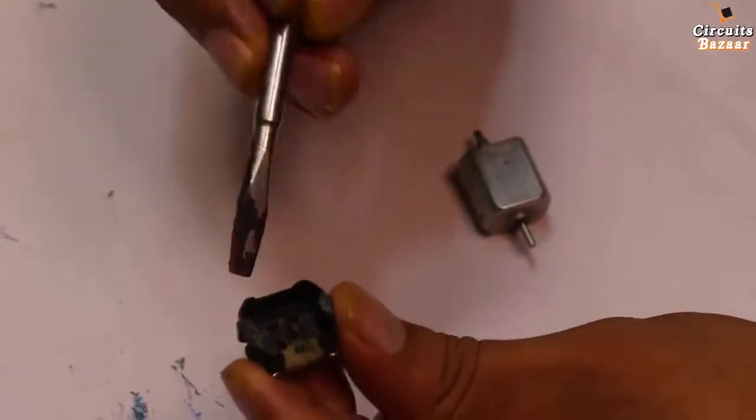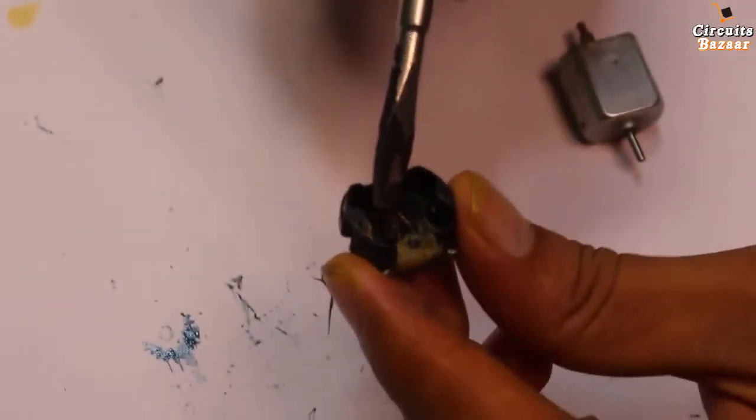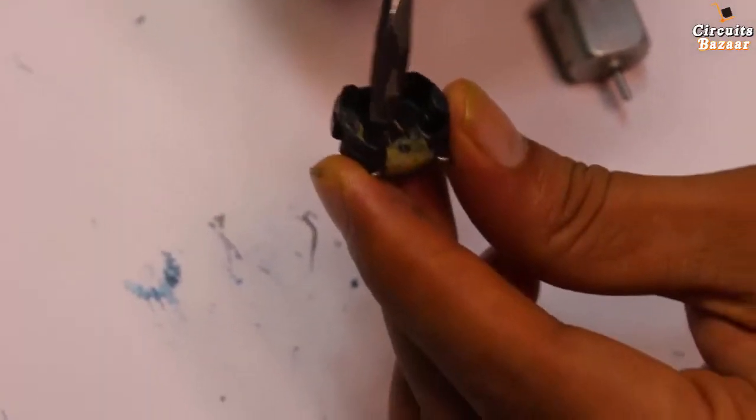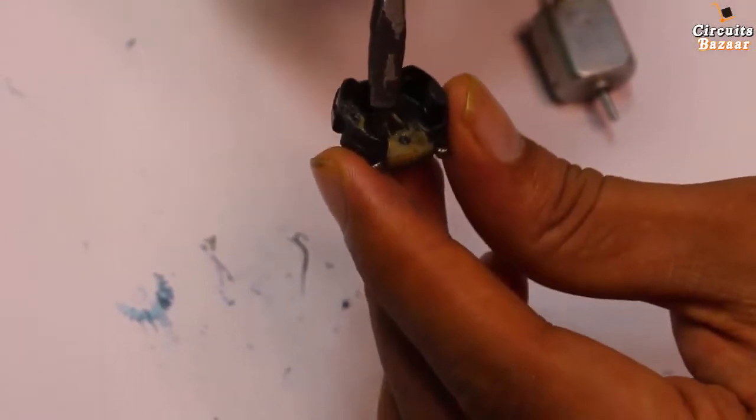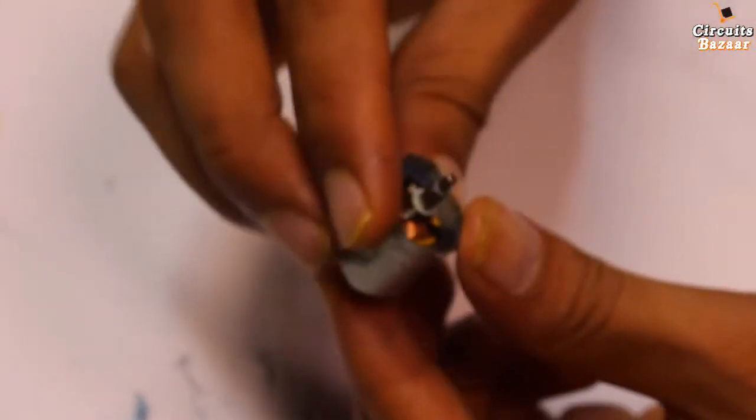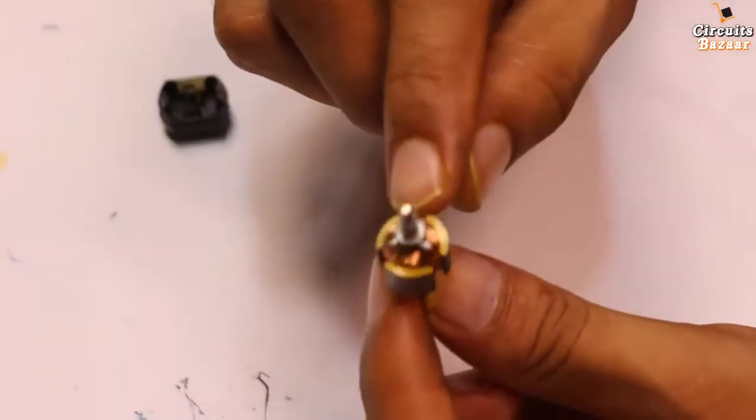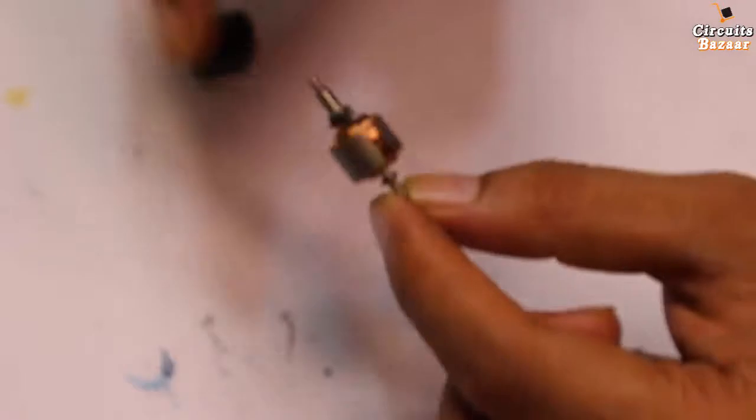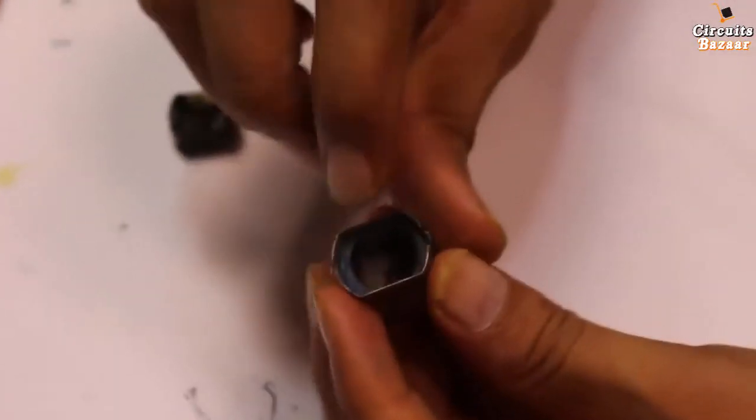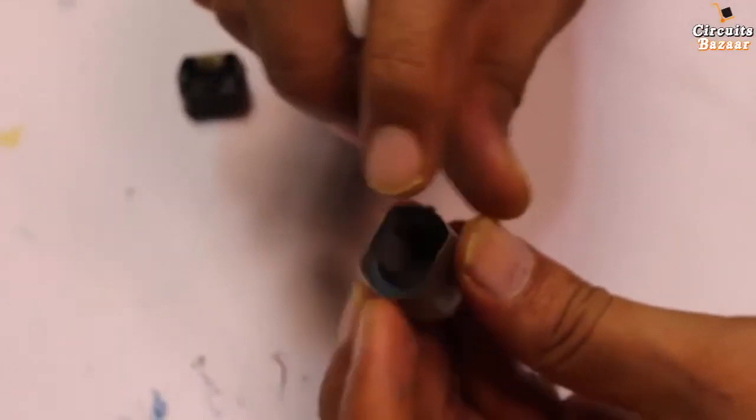So these two are the brushes, this one and this one. These two are the brushes which are used to transfer current to the commutator and this is the commutator inside the housing, right. So these are the three commutator inside the motor and these are the magnets. These two are the magnets.